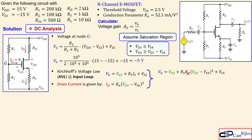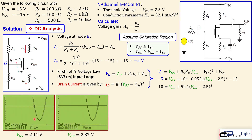All other quantities are known: RS, KN, VT, and VSS. Substituting the values — RS = 1000 Ω, KN = 0.0521 mA/V² — we get a quadratic expression. Solving using the quadratic formula or a plot yields two intersections: VGS = 2.11 V and VGS = 2.87 V.